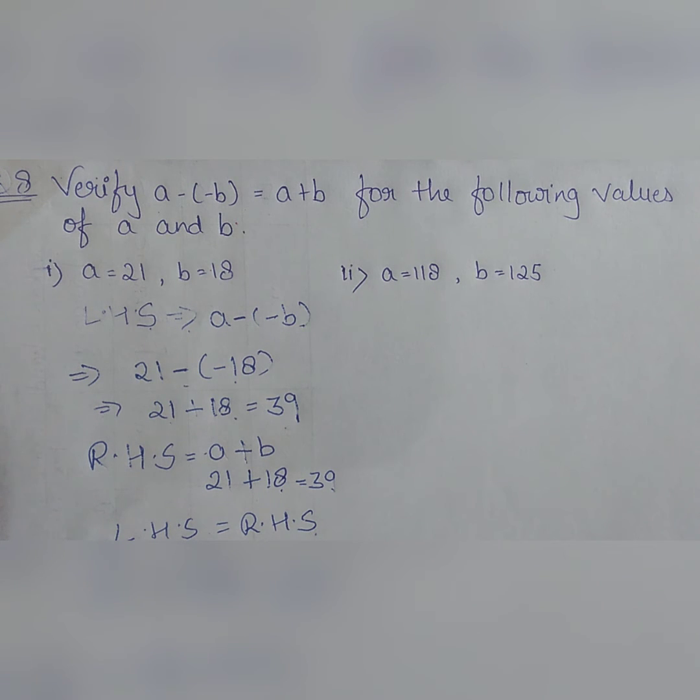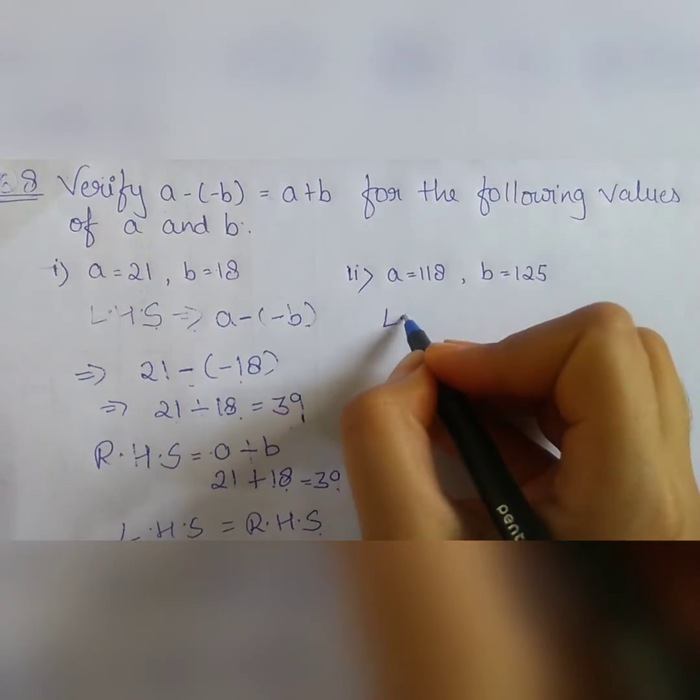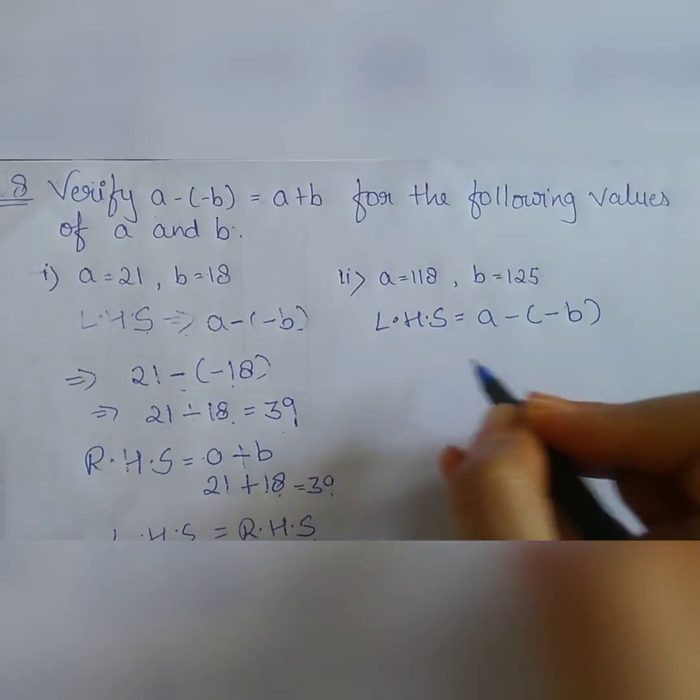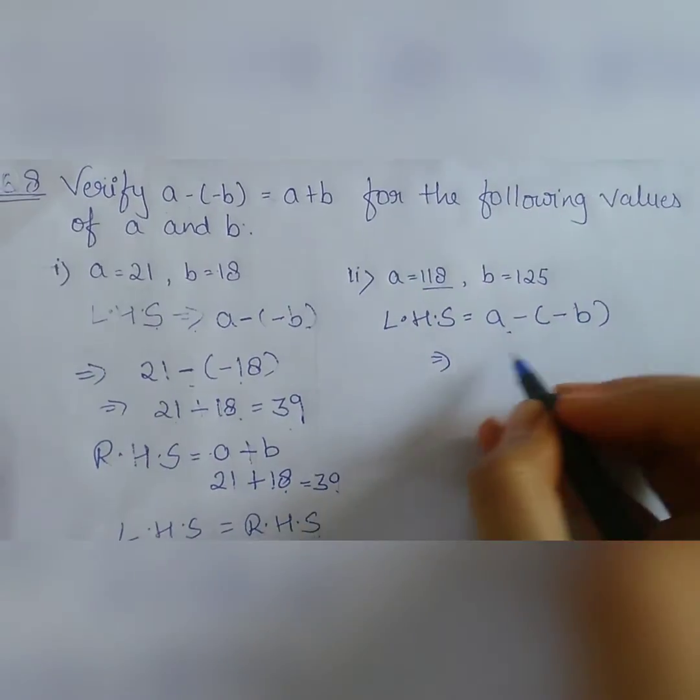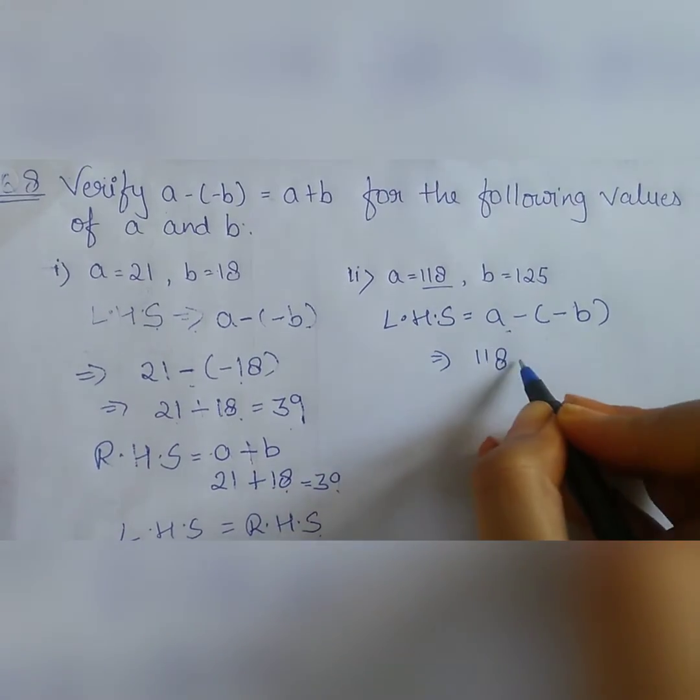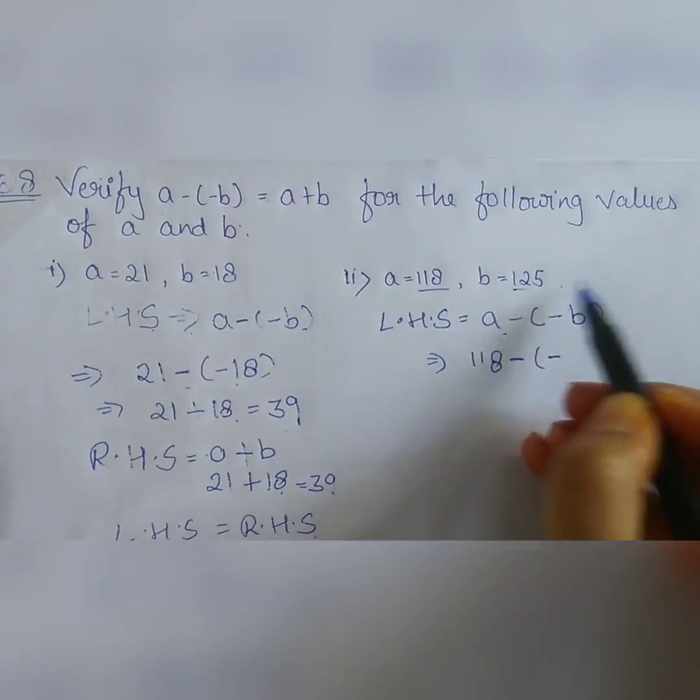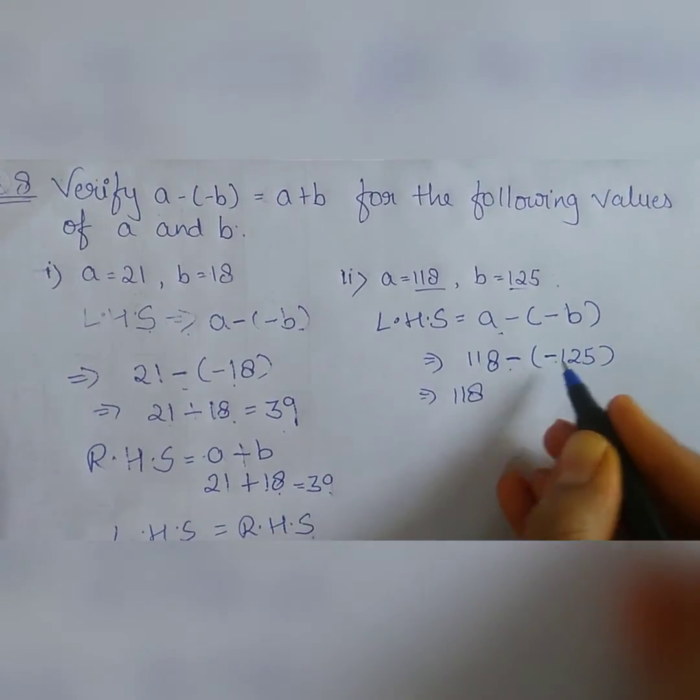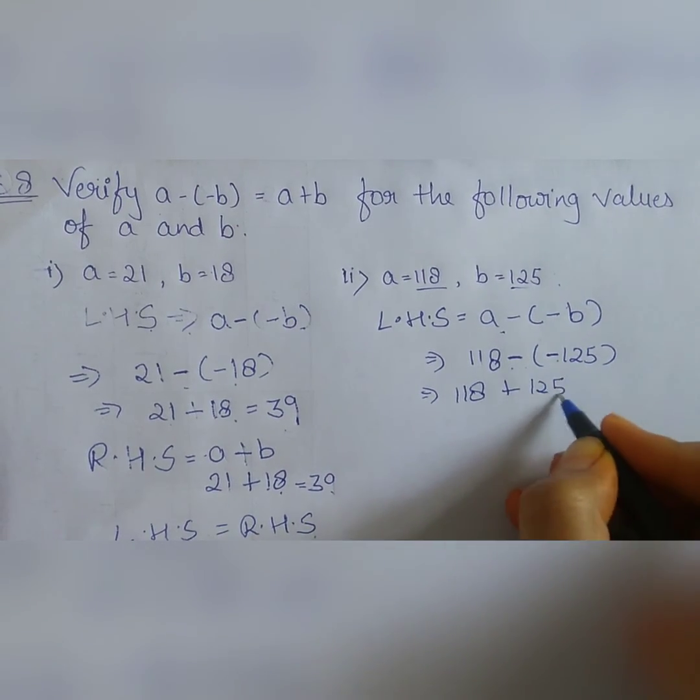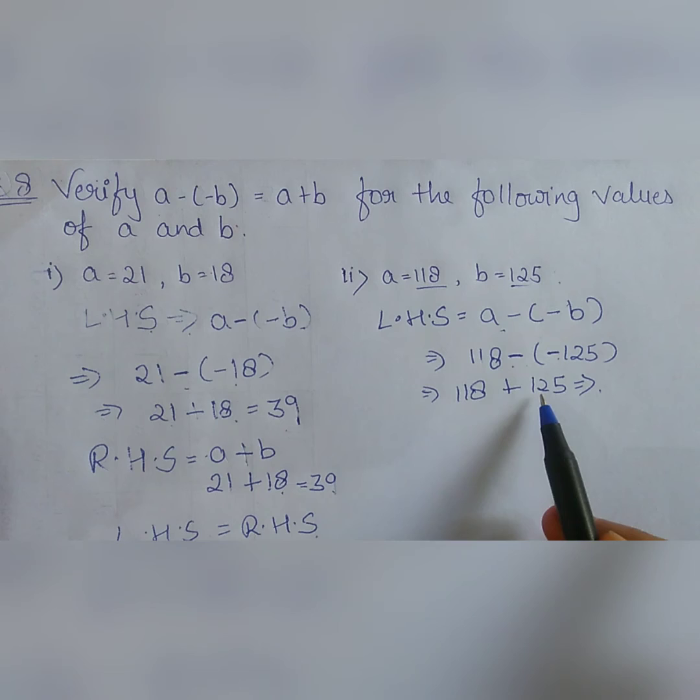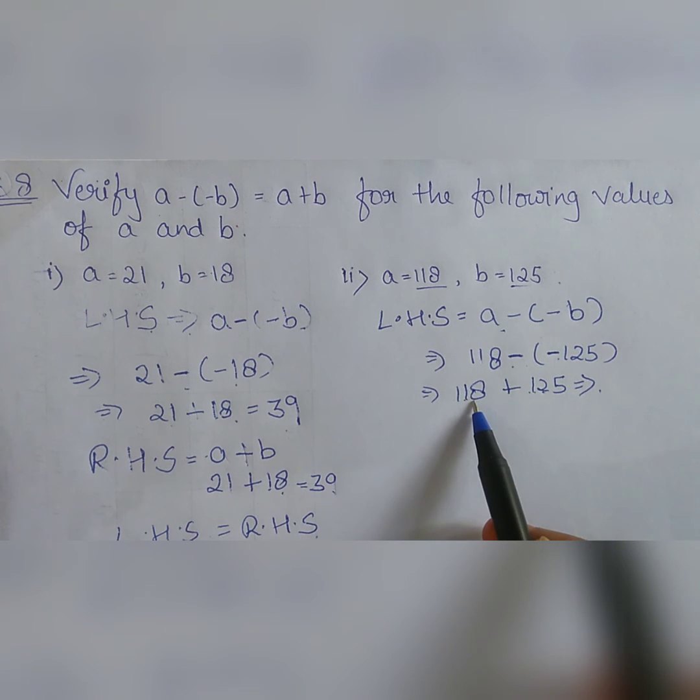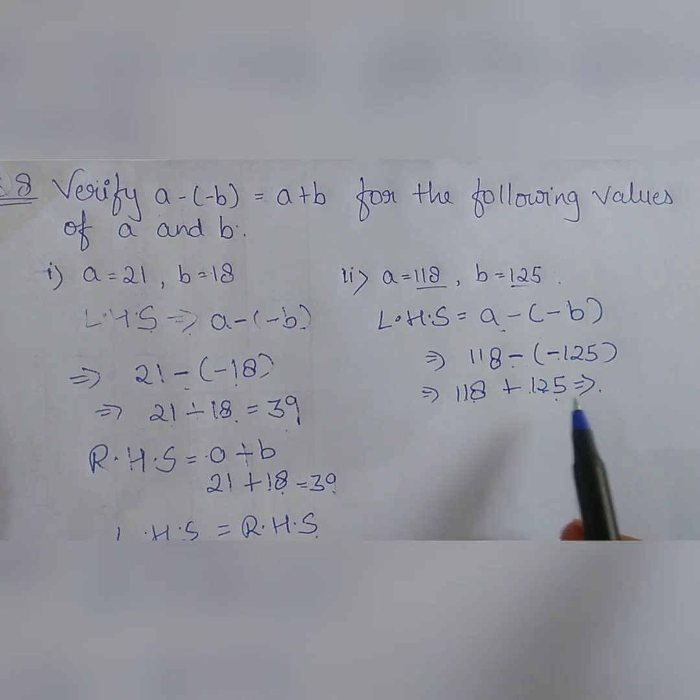Now let's see second part of this question. We will take LHS first. LHS is A minus minus B. A here is 118, so 118 minus minus B here is 125. So 118 minus minus becomes plus 125. 100 plus 100, 200, 220, 230, 238 plus 5, that is 243.